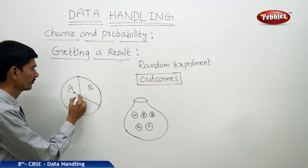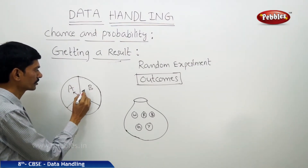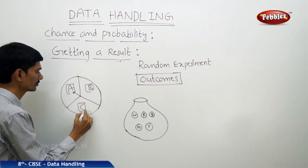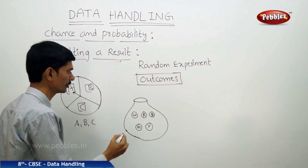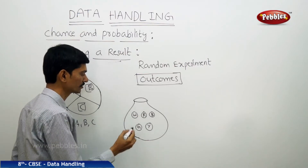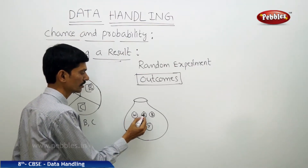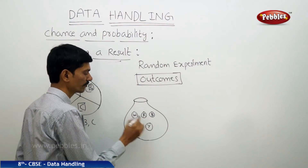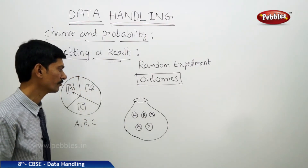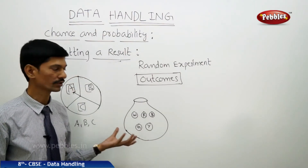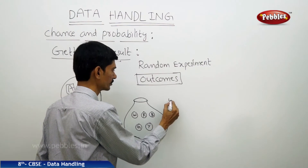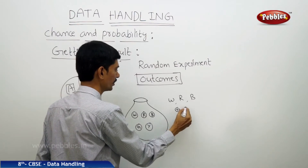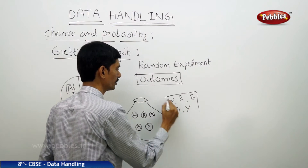Now consider a spinning wheel. The possible outcomes are A, B, and C. If you consider another example — a bag with five identical balls: W means white, R means red, B means blue, G means green, and Y means yellow. Out of these five identical balls, if you pull out a ball from the bag, the five possible outcomes are W, R, B, G, and yellow.